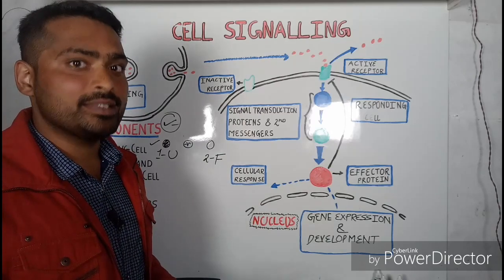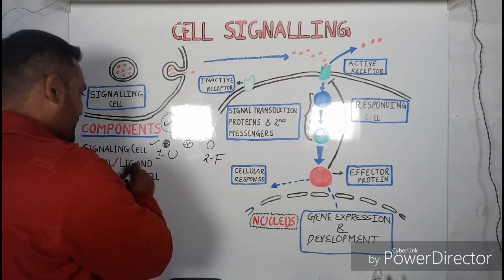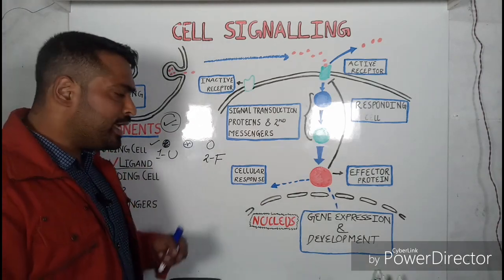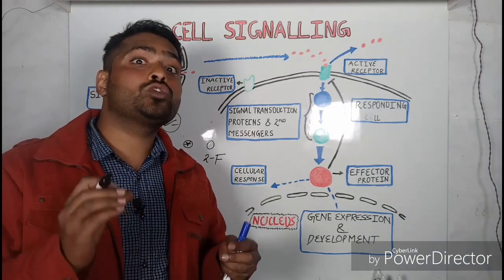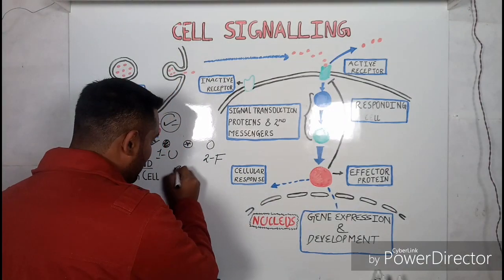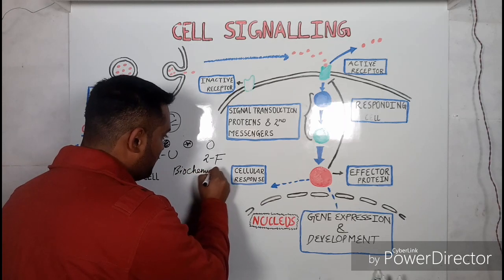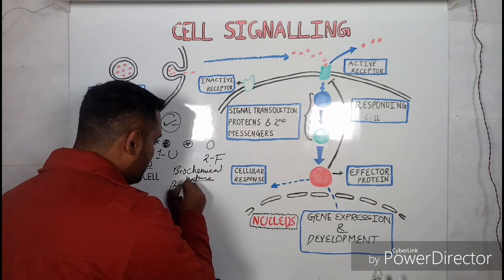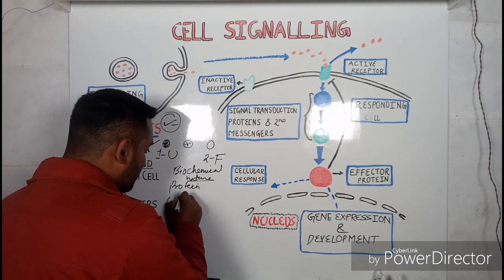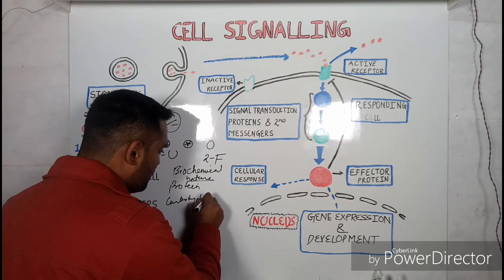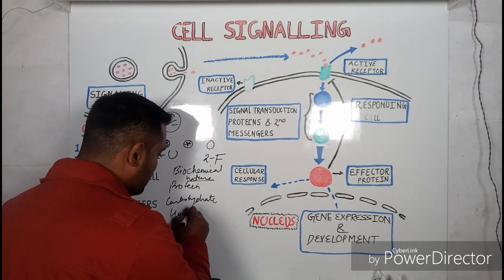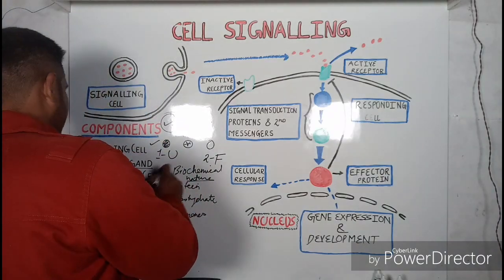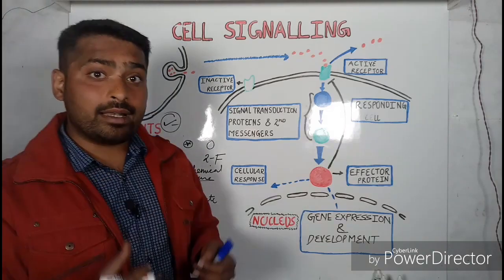Now we discuss these components. The first component is the signaling cell — the cell which is synthesizing the signal. The second component is the signal, or the ligand. We also call the signal a ligand. This signal can be anything of biochemical nature — it can be a protein, a carbohydrate, hormones, or fatty acids.